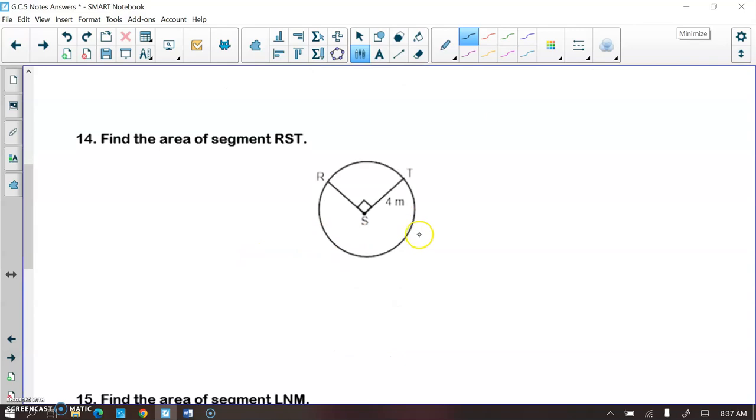So let's go ahead and start with number 14. It says to find the area of segment RST. It did not have it drawn in for you, so let's draw that in. We're trying to find the area of this.